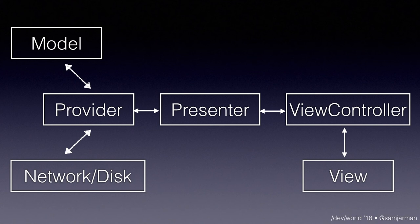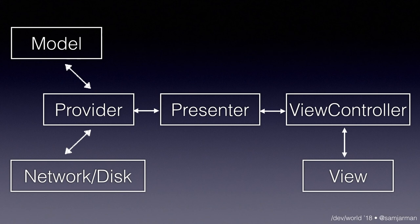Already you can see the view controller is not massive. It doesn't do much — it's kind of the same size as everything else, which is quite deliberate. The arrows describe the data flows. The view talks to the view controller, the view controller talks to the presenter, the presenter talks to the provider, and the provider uses the model and the network or disk to produce data back. What's not happening is the view talking to the provider, or the view controller talking to the disk. We split these out into simple single-responsibility objects.